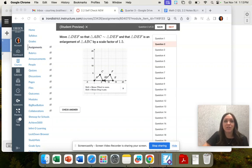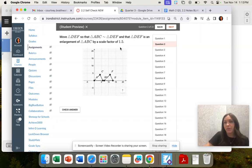Question two: move triangle DEF so that ABC is similar to DEF, and DEF is an enlargement by scale factor of 1.5.